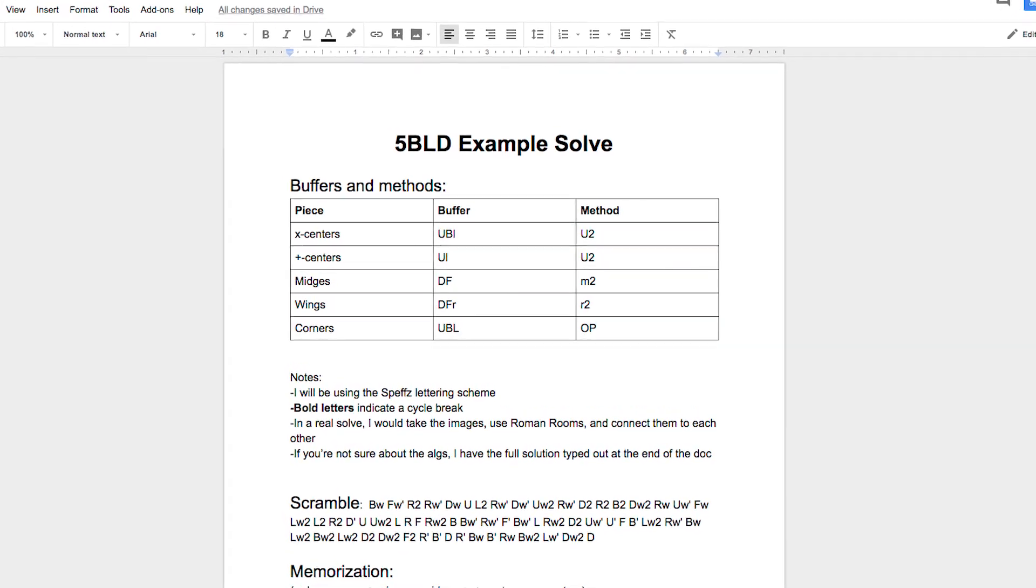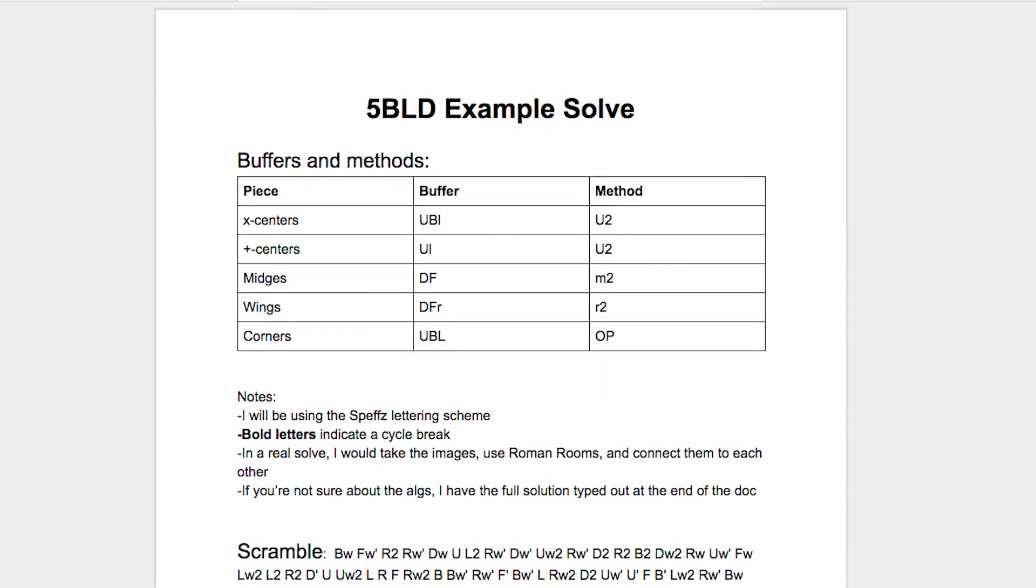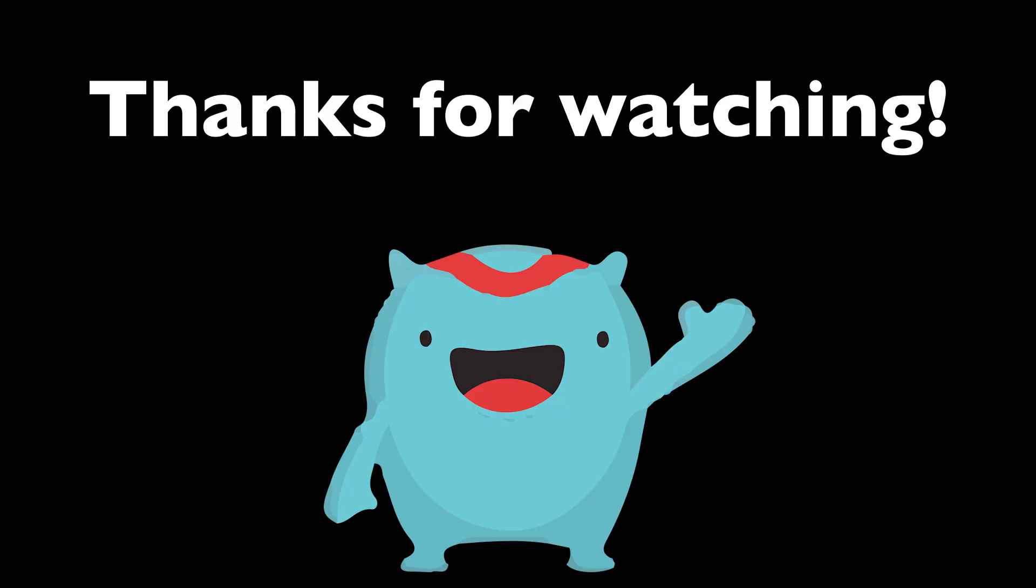I also typed out a full five-blind example solve with some notes. The link is in the description, so if you're having trouble with five-blind, make sure you check that out. Other than that, that's it for five-blind. If you have any questions, put them in the comments, and I will be sure to read them. Thanks for watching.